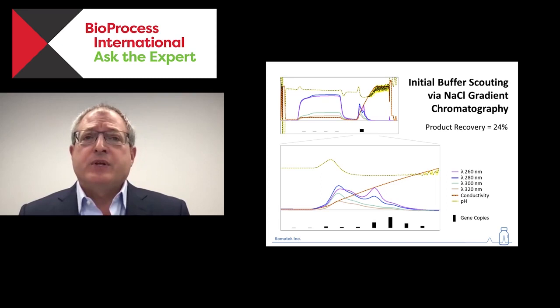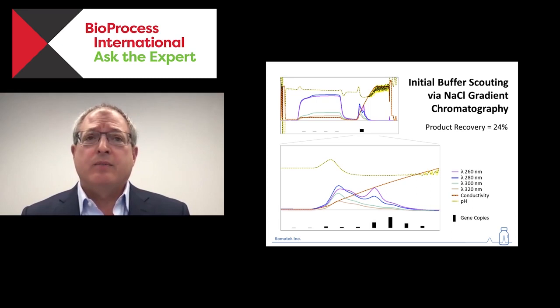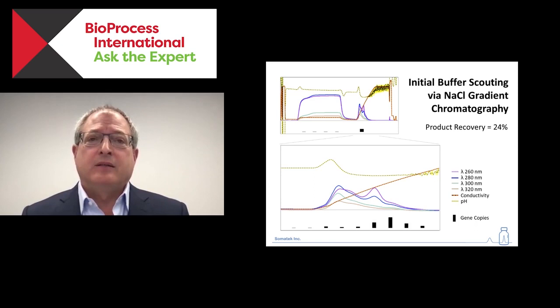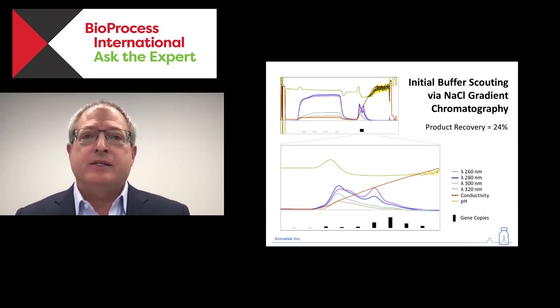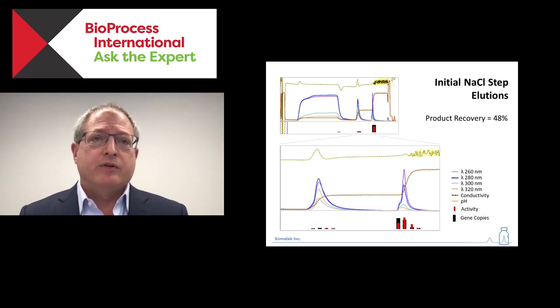The first thing we did was get a sense for which buffer chemistries would work, so we did a series of gradients. We loaded material onto one-mL columns and ran a sodium chloride gradient, looking to see where the product came off and where the contaminants came off. At the bottom of the chromatograms, a bar graph shows how many gene copies of our product we're getting off. There's not a lot of correlation between the UV species and the product, which is good because it means we can move contaminants away from the product. Gradients aren't something you want to transfer to a manufacturing group, so we moved to step gradients.